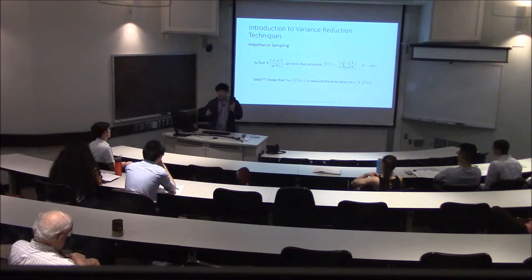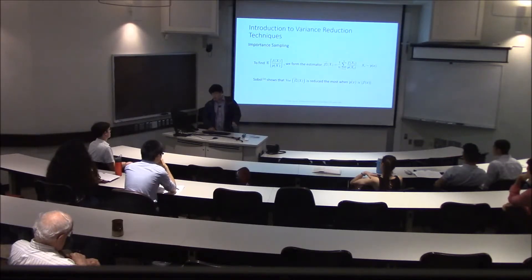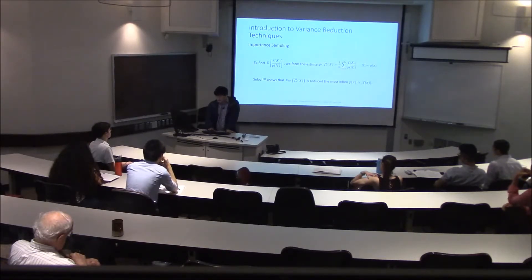If we get the best approximator where p of x is just a constant times the function of x, then we'll be taking the variance of a constant which is zero. But practically speaking, it's very hard to find a good probability density function because most of the time f is a black box function or some really complex function. So we just shoot for something—it would be ideal to find a PDF that's close to f.